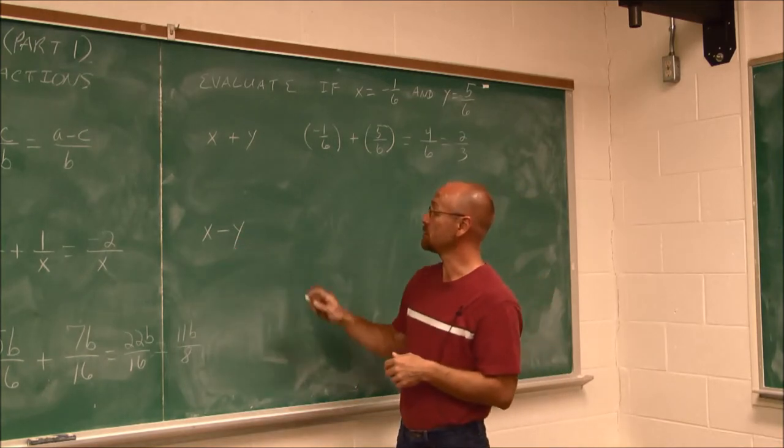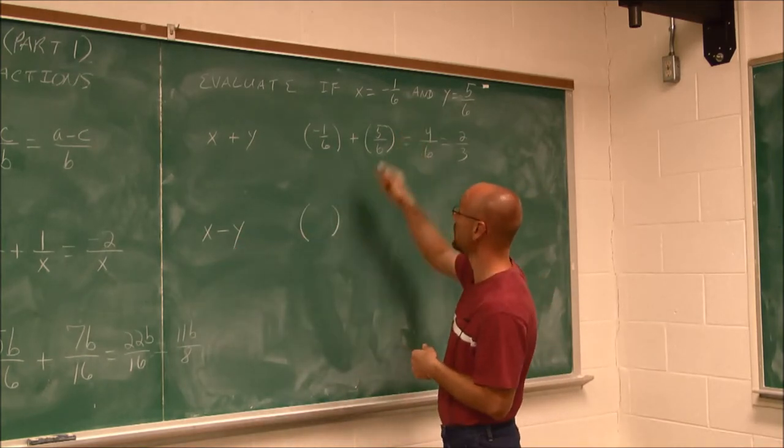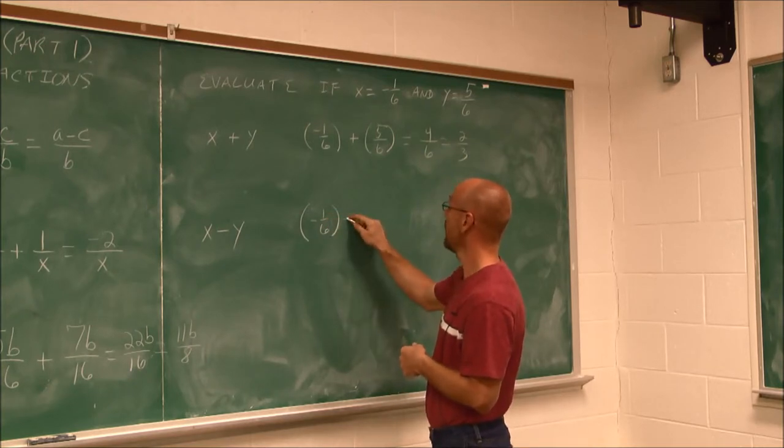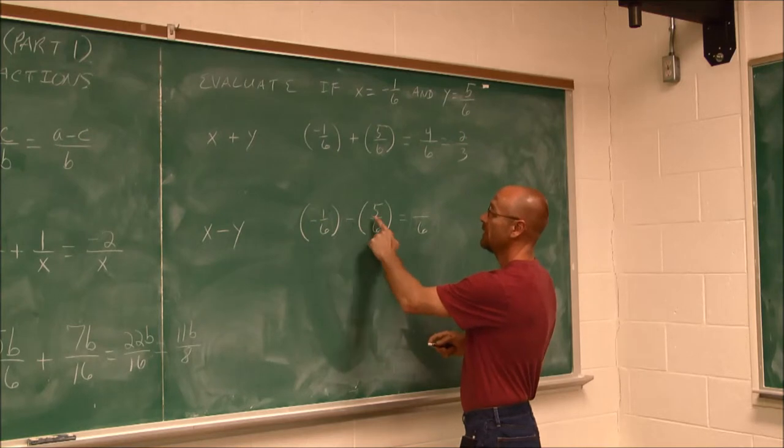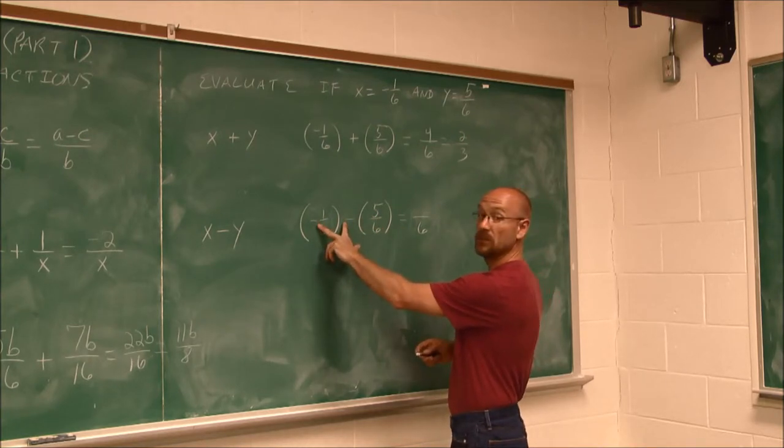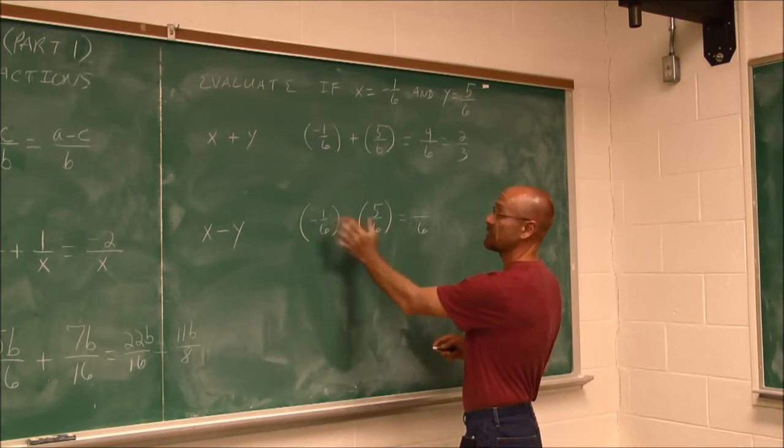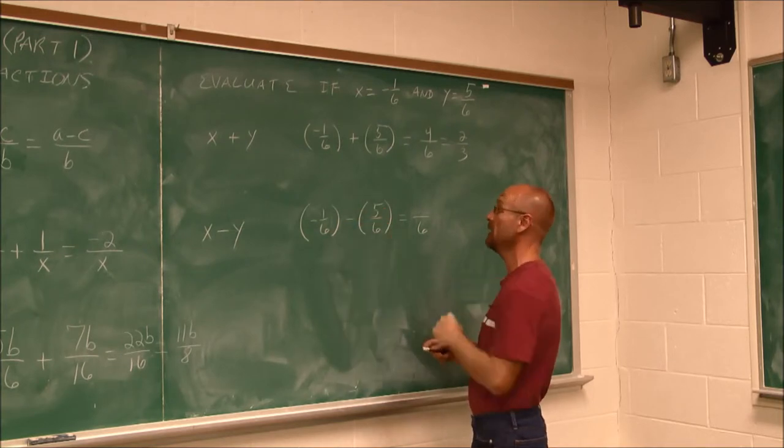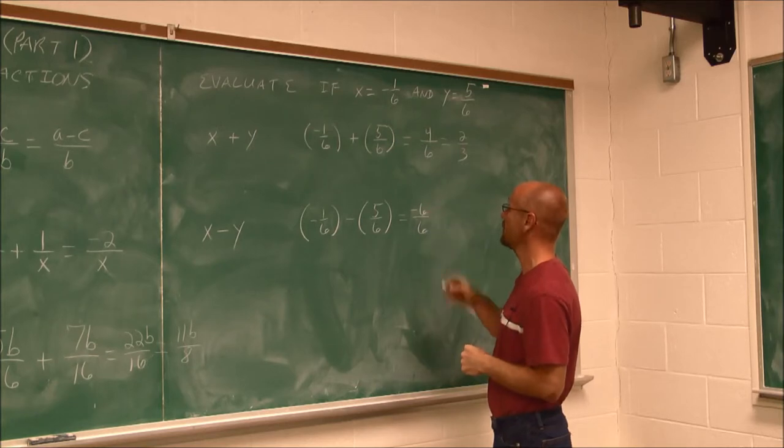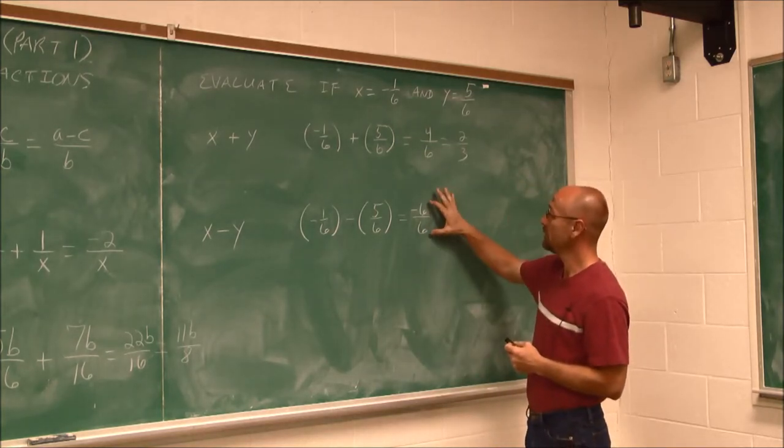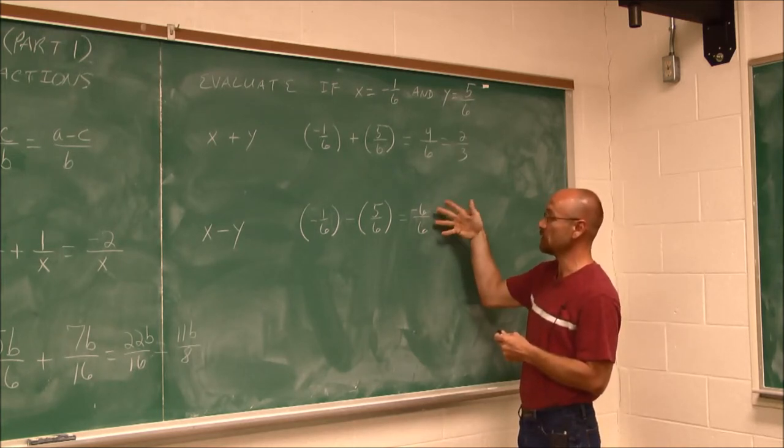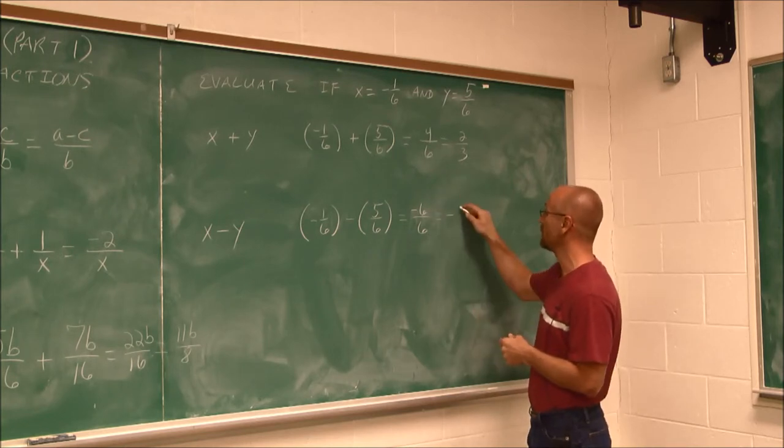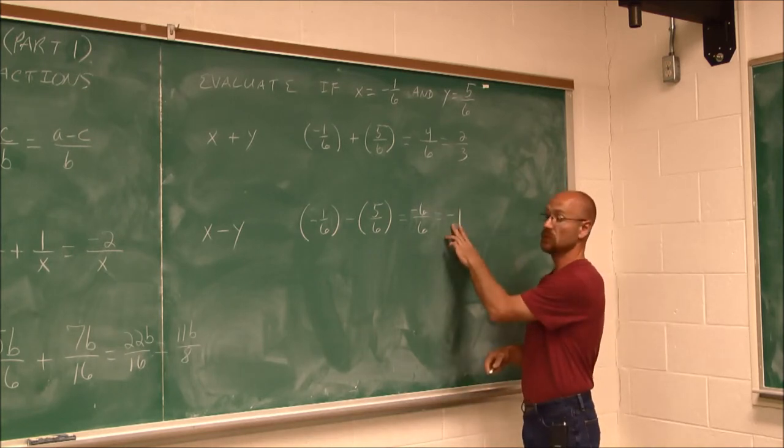This example we're going to subtract. So I'm going to evaluate for my given x value of negative 1/6. And I'm going to subtract 5/6. And now we can see the denominator hasn't changed again. It's still the same, but we have subtraction. Well, because these are integers, I assess and say, well, they have the same sign. So I'm going to combine negative 1 and negative 5 is negative 6. And now I look at this and say, well, we have one negative, so my value is going to be negative. And I can actually do this division. They're both 6. Anything divided by itself is 1. So my final solution is negative 1.